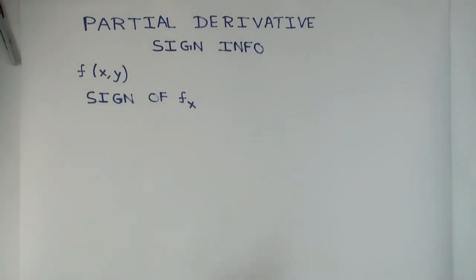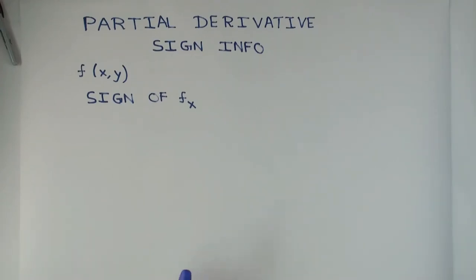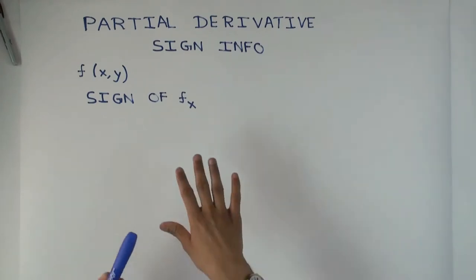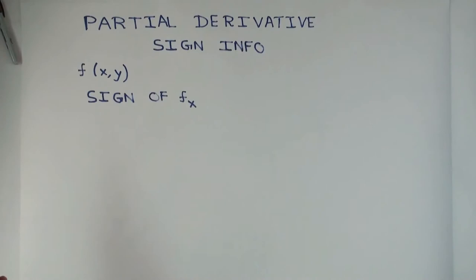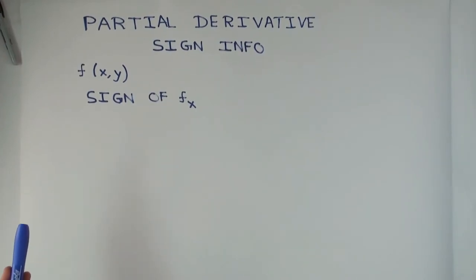In this video I'm going to briefly talk about what the sign of the partial derivative — whether it's positive, negative, or zero — tells you about the way the function is changing. This is not really anything very deep if you already know the corresponding stuff for single variable. I'm going to ignore many subtleties because the focus is just to give you the very crude idea.